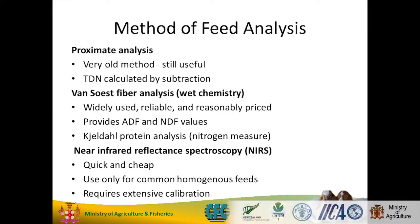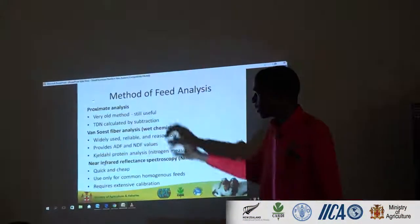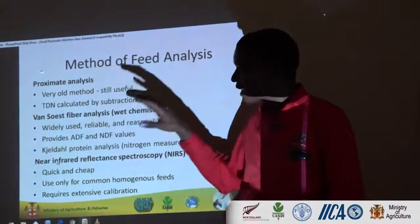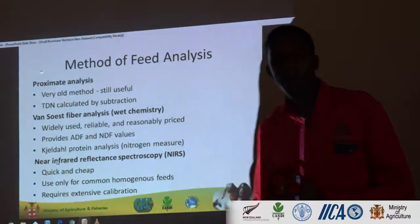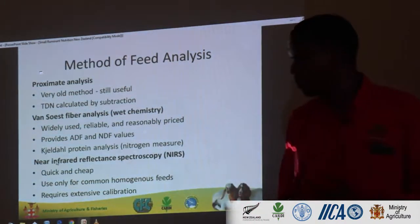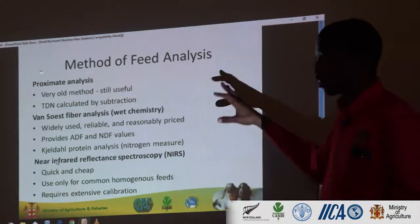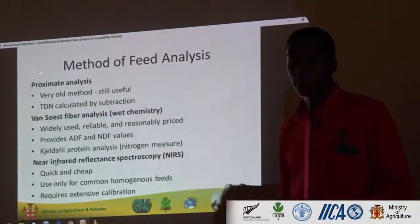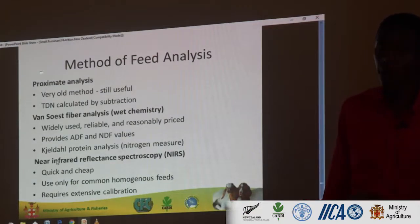Total digestible nutrients — you can use this to calculate it. When you use this formula, you can calculate the TDN, the DDM, and relative feed value. You can use all that. You can actually use the NDF and ADF to determine the dry matter intake of particular animals — cattle, sheep, and goat. There are formulas for that.